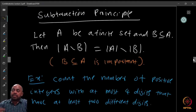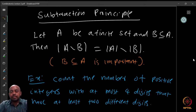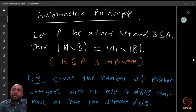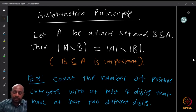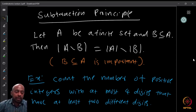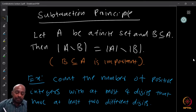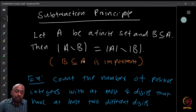Now here is the subtraction principle. If A is a finite set and B is a subset of A, then the cardinality of A minus B equals the cardinality of A minus the cardinality of B. So if we want to subtract to count things we need B to be a subset of A — if B is not a subset of A, this principle cannot be directly applied.